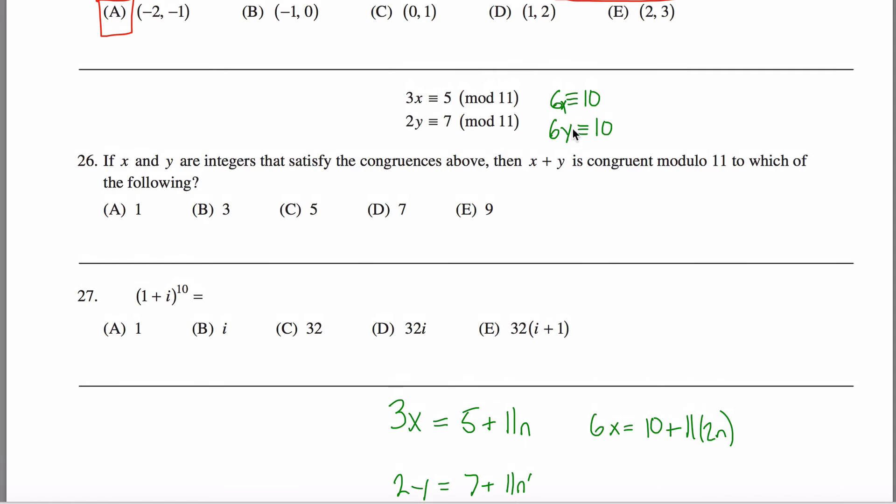Anyways, that gets me here. 6x is equivalent to 10. 6y is equivalent to 10. Therefore, 6x plus 6y is equivalent to 10 plus 10. In other words, 20 mod 11, but 20 mod 11 is the number 9. So that gets me here.